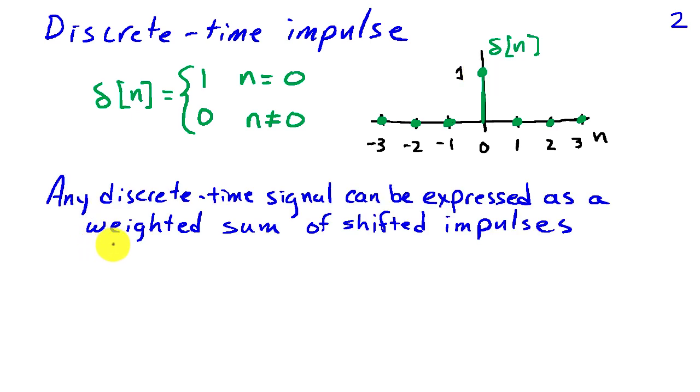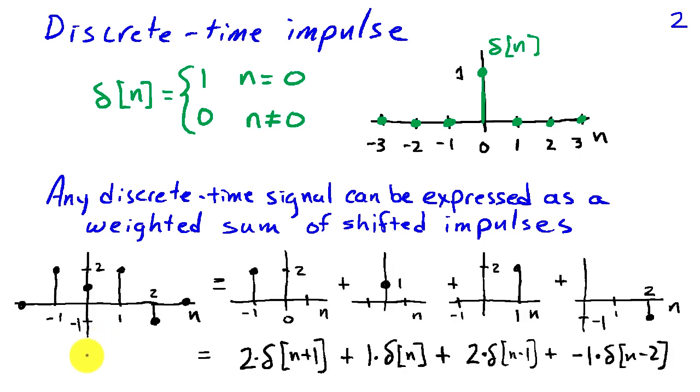One of the reasons that impulses are so useful is because we can express any discrete-time signal as a weighted sum of shifted impulses. So here's an example of that.